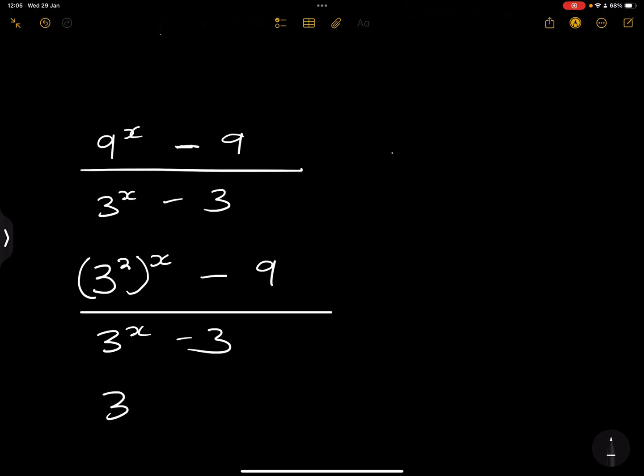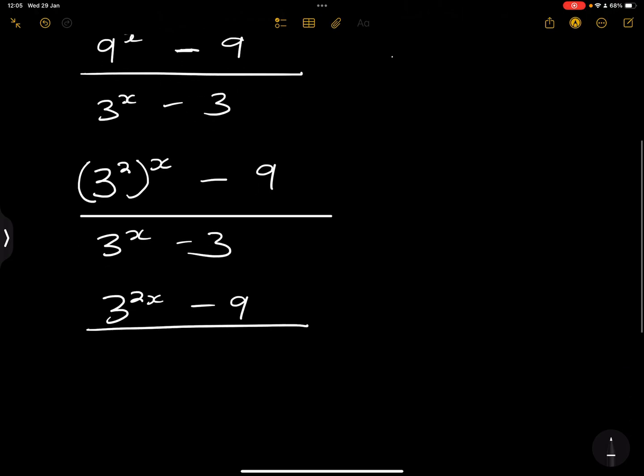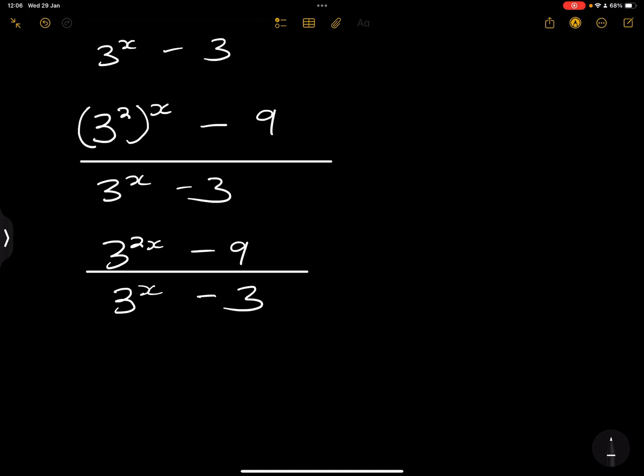Now if you look at this, we now have 3 to the power of 2x minus 9. That is definitely the difference of two squares. So what do we do? We're going to say this would give us 3 to the 2x, which should be 3^x minus 3, taking the difference of two squares, that's 3^x plus 3. So this is divided by 3^x minus 3.